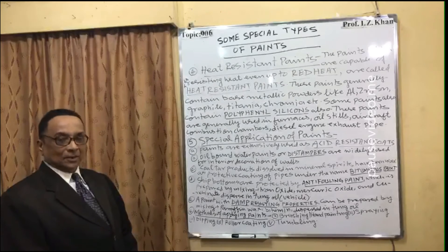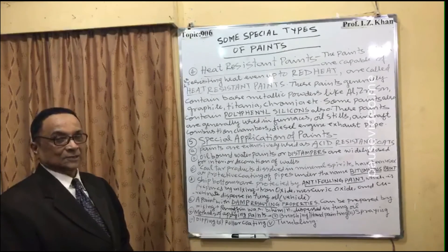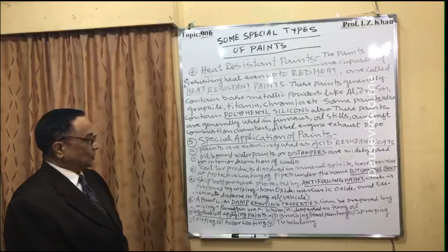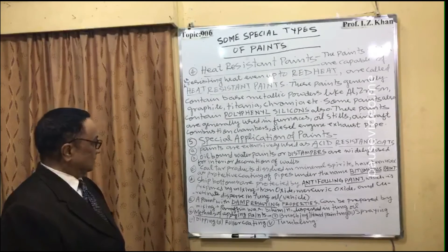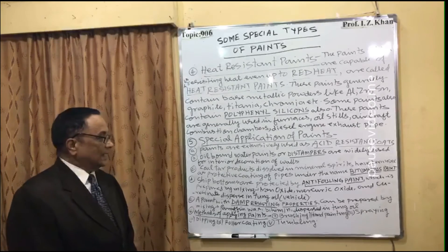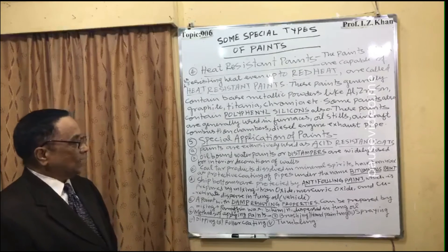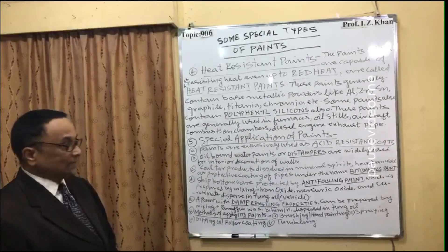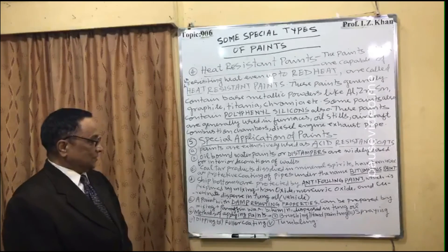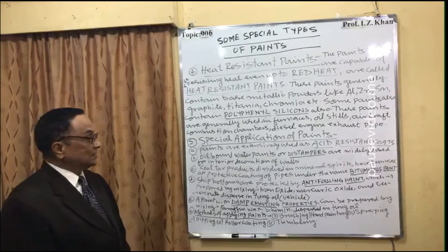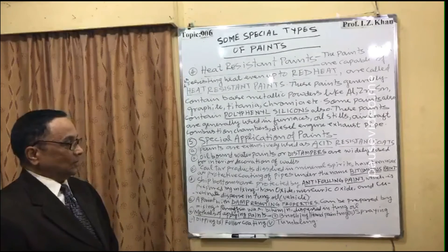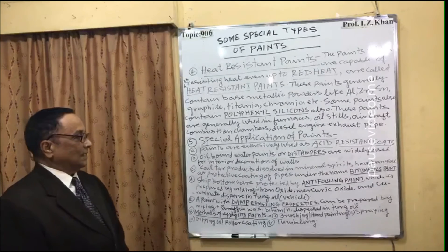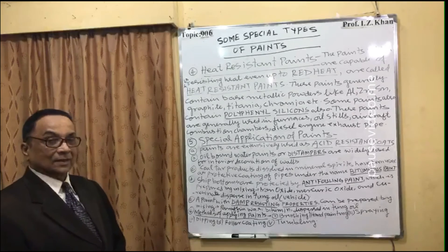Bituminous paint, where coal-tar bitumen is dissolved in spirit, is widely used as a protective coating for pipes. Fourth, ship bottoms are protected by anti-fouling paints, which are prepared by mixing iron oxide, mercuric oxide, and copper resinate dispersed in tung oil (vacuum). This is applied to paint the bottom of the ship to avoid corrosion.